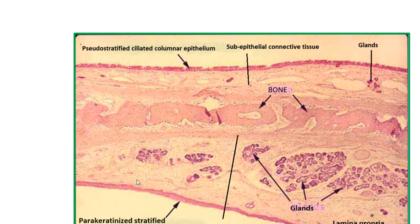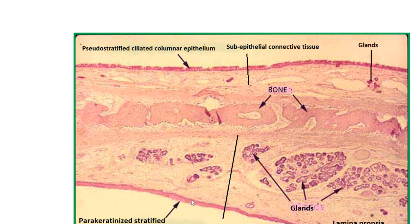This is the cross-section of the hard palate. This is the nasal surface and this is the oral surface. The lining epithelium of the nasal surface is pseudostratified ciliated columnar epithelium. Under the epithelium there is a sub-epithelial connective tissue layer which occasionally contains some glands and blood vessels. This mucosa is firmly attached to the periosteum of the bones of the hard palate.